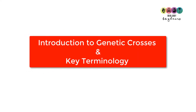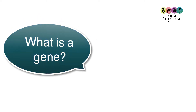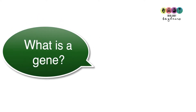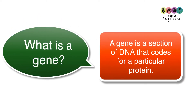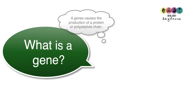This video is an introduction to genetic crosses and includes key important terminology. We'll start by asking: what is a gene? Because genetics is all about genes. A gene is a section of DNA that codes for a particular protein, and sometimes it'll be said that a gene causes the production of a protein or a polypeptide chain.